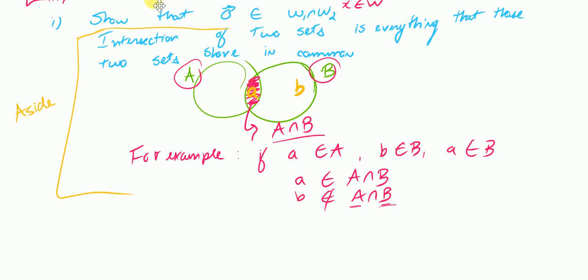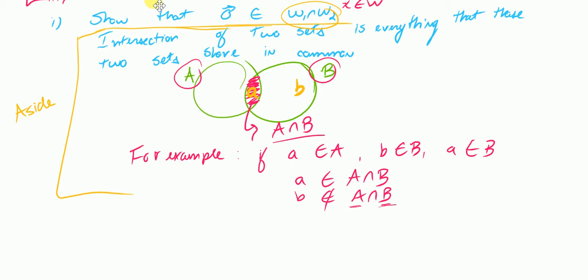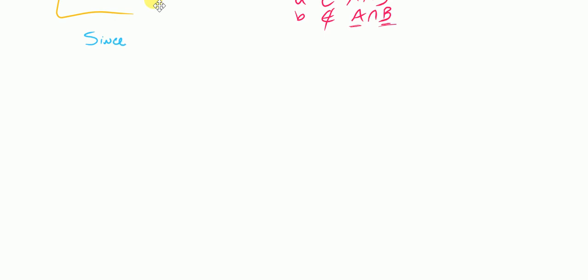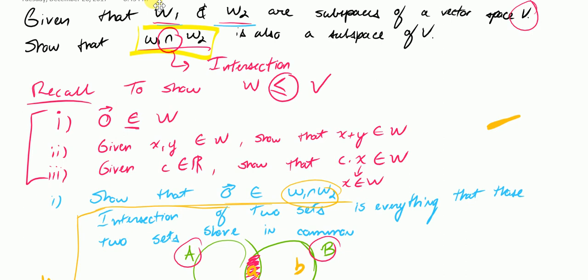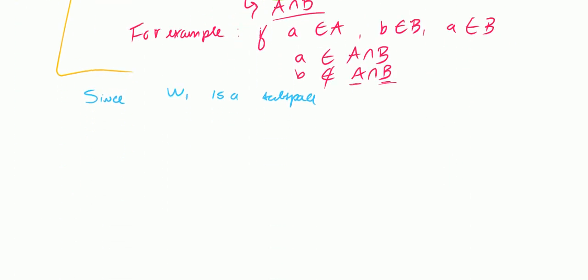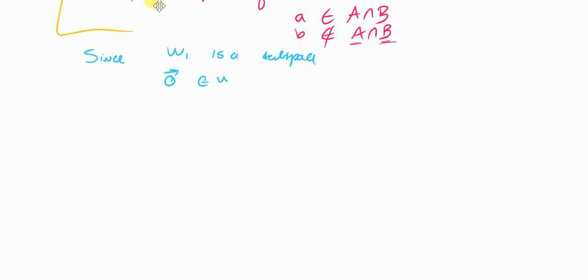Now, back to the actual problem: I want to show that the zero vector belongs to the intersection. Since W1 is a subspace — and we're given that W1 and W2 are subspaces — then the zero vector belongs to W1, because one of the three properties of a subspace is that it definitely contains the zero vector. Similarly, since W2 is a subspace, the zero vector belongs to W2.